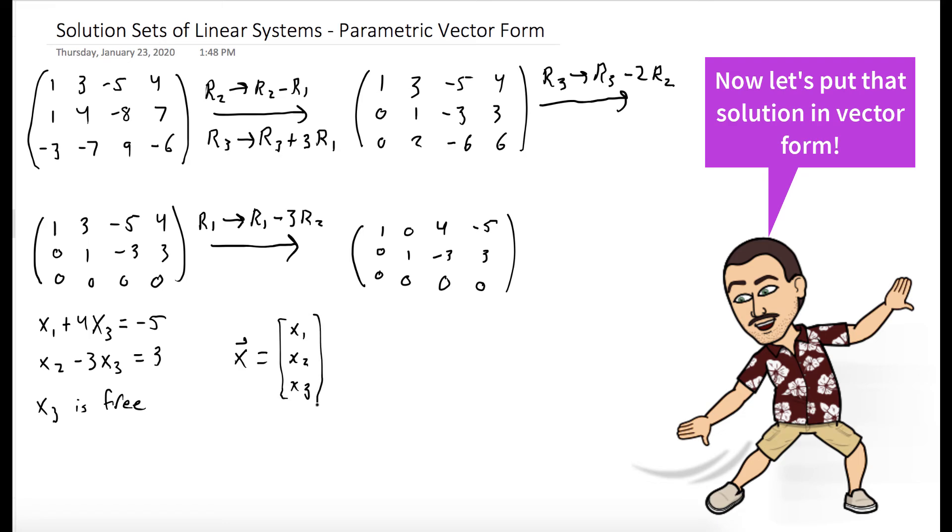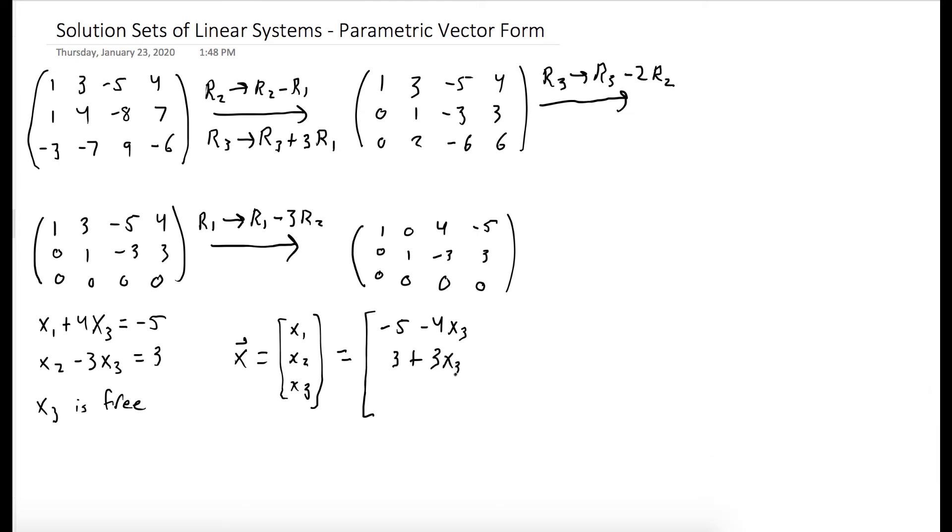So now we want to write our answer in vector form. Solving for x1 and x2, we get x1 is minus 5 minus 4x3, and x2 is 3 plus 3x3.